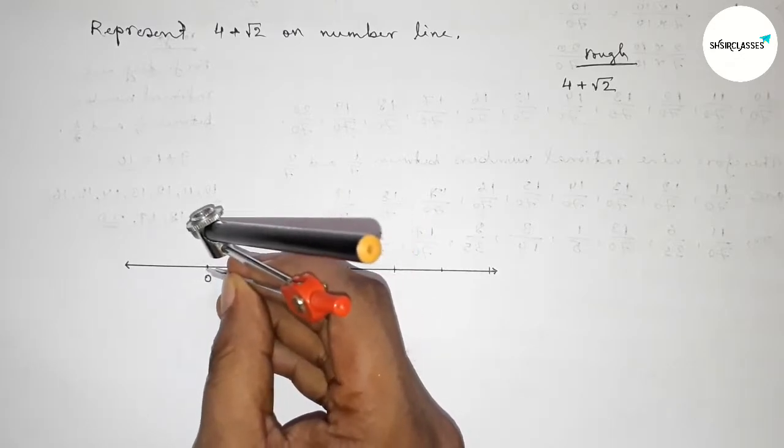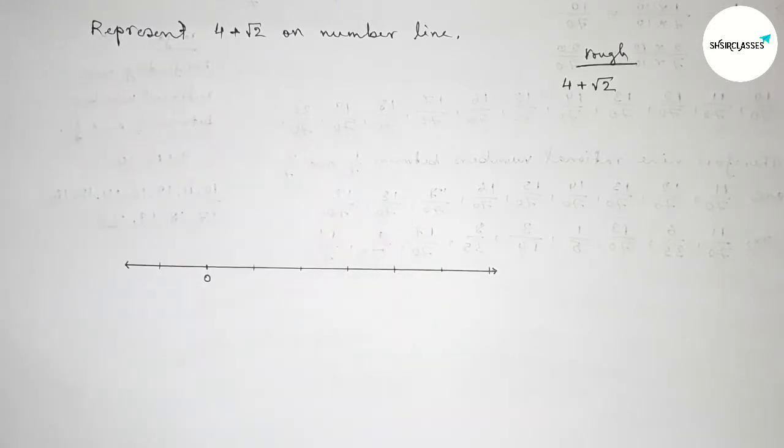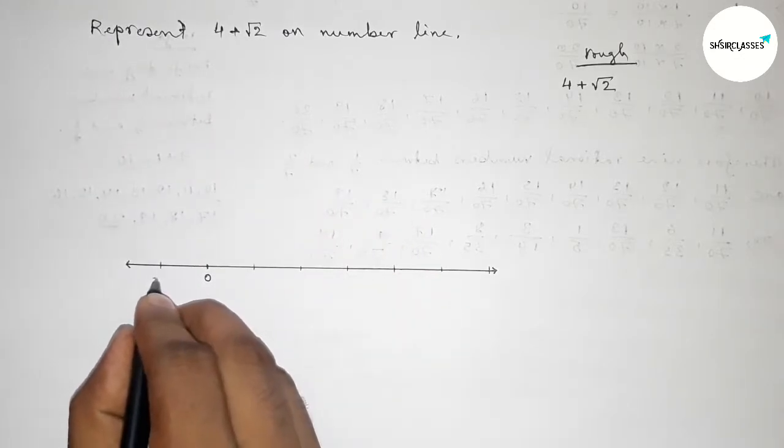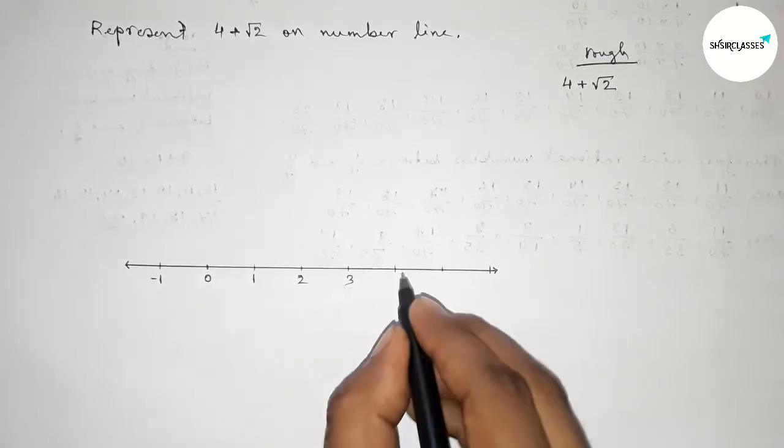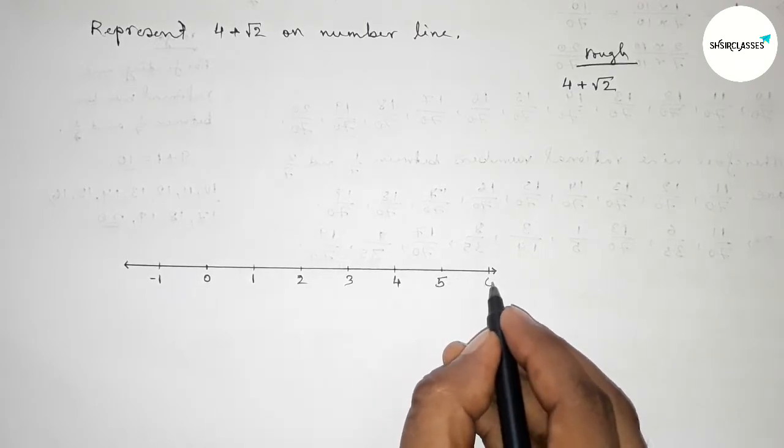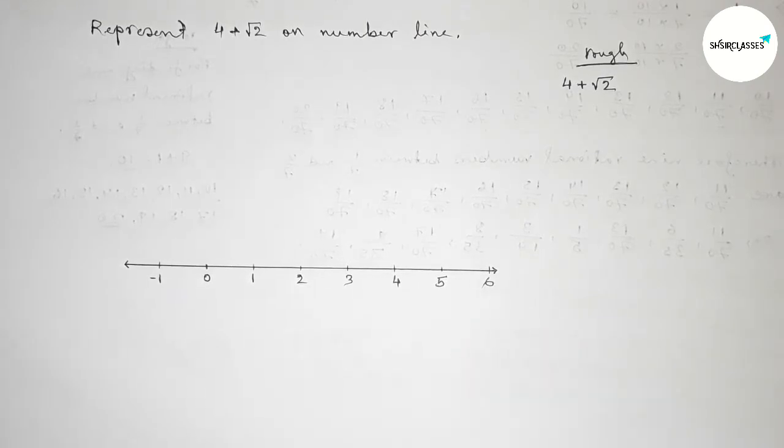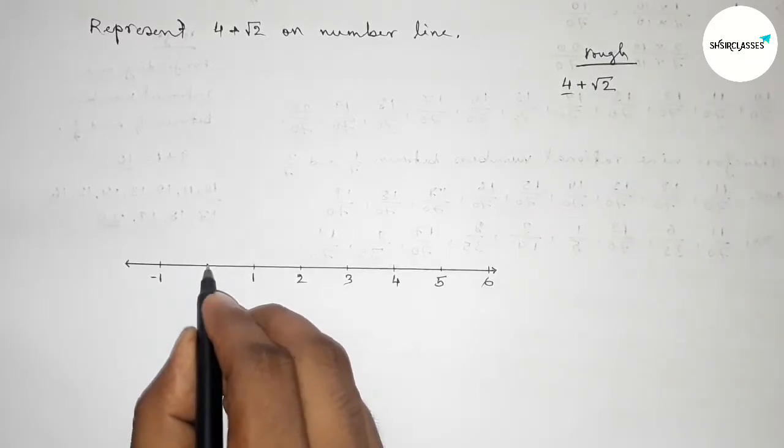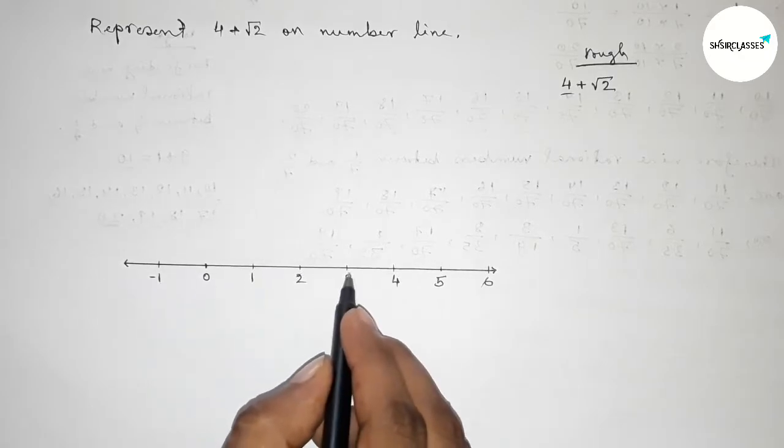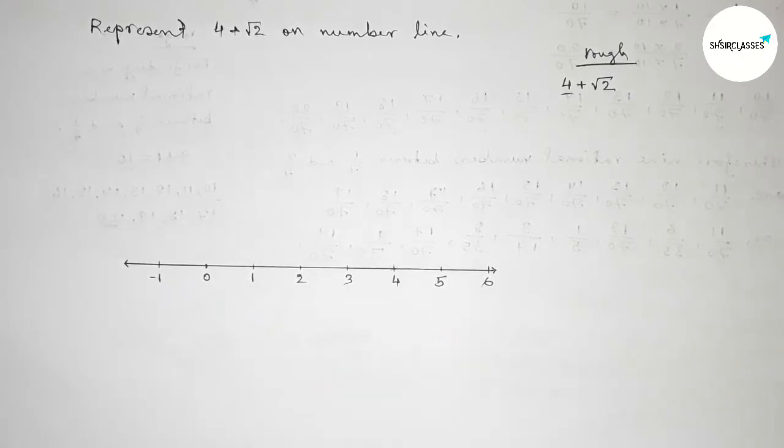Marking this side, now taking here minus 1, here 1, 2, 3, 4, 5, 6 and continuous. Now roughly discussing 4 plus root 2, so here 4 unit length. From 0 to 4 this is 4 unit length, so taking here point O and here A.